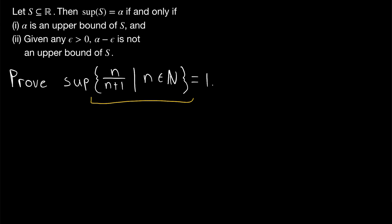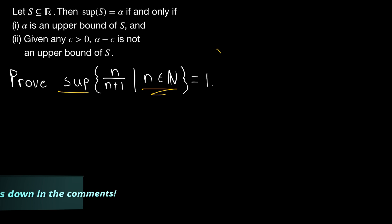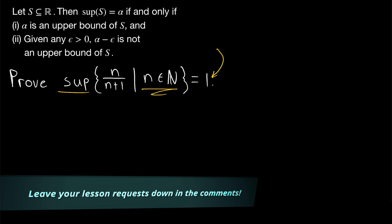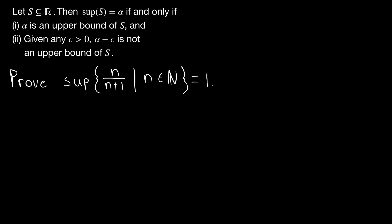The set containing elements of the form n over n plus 1 for all natural numbers n has a supremum of 1, and that's what we'll be proving in today's Wrath of Math lesson. Remember that the supremum of a set, if it exists, is the least upper bound. For this proof, we'll be using this equivalent definition of supremum that's pretty useful for supremum proofs, so get familiar with it.